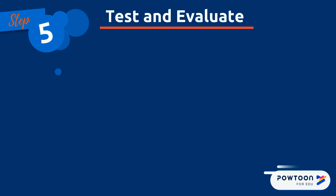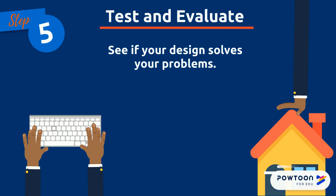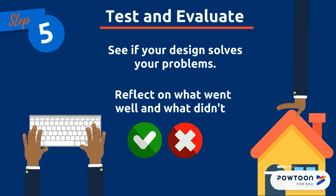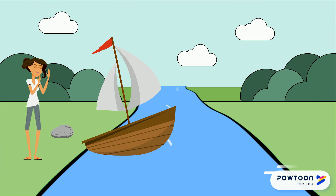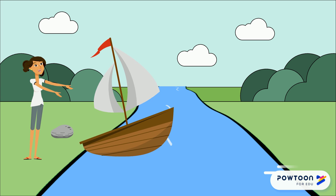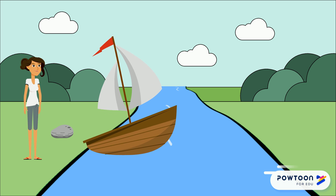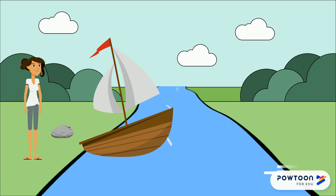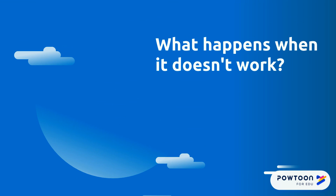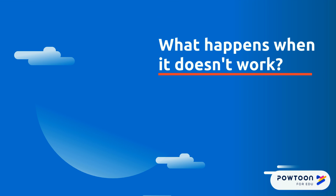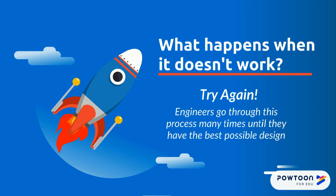The fifth and final step of the engineering design process is to test and evaluate. The goal of this step is to see if the design solves the problem identified in step one. During this stage, engineers will reflect on what went well and what didn't, so they can make changes going forward. Maddie needs to test her design before she actually uses it. Instead of testing it on herself, which could be dangerous, Maddie decides to use a rock to see if the boat can hold some weight. It's okay if your design didn't work the first time — it's important to try again. Engineers go through this process many times until they get a prototype that works, and even more to get one that's perfect.